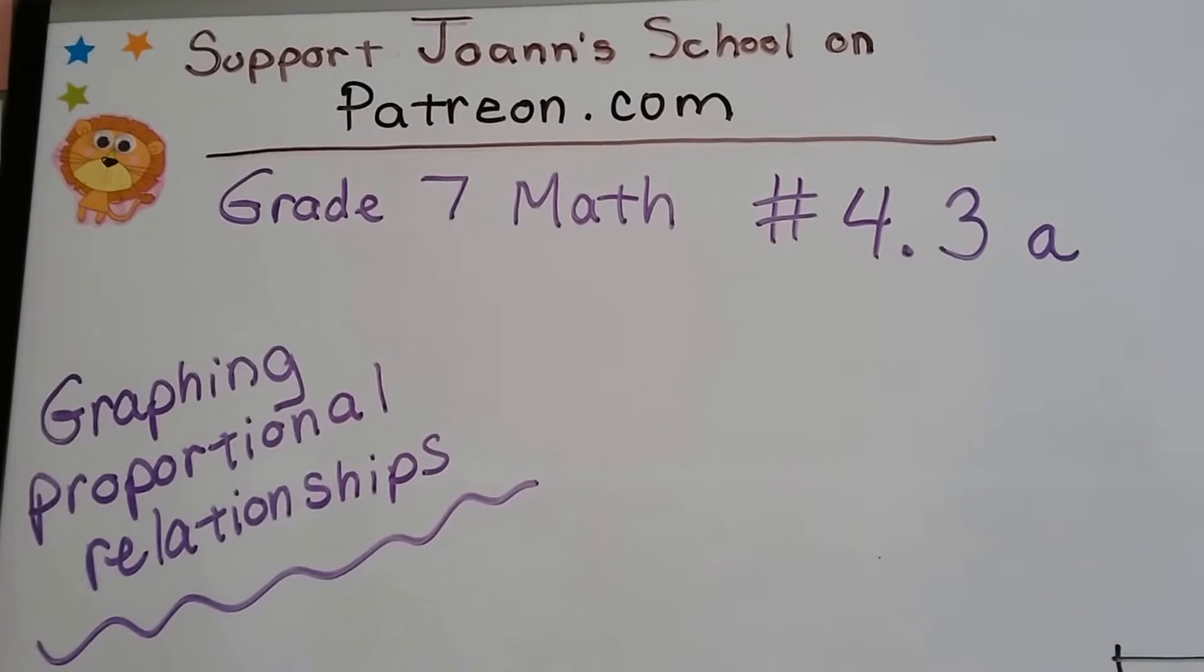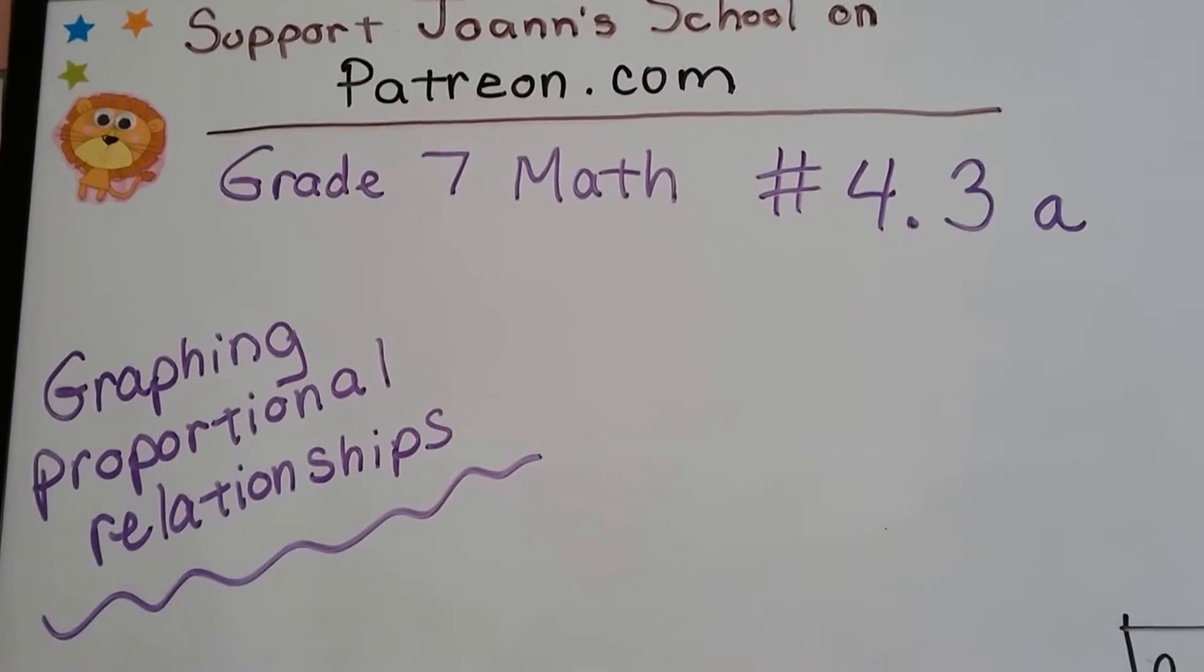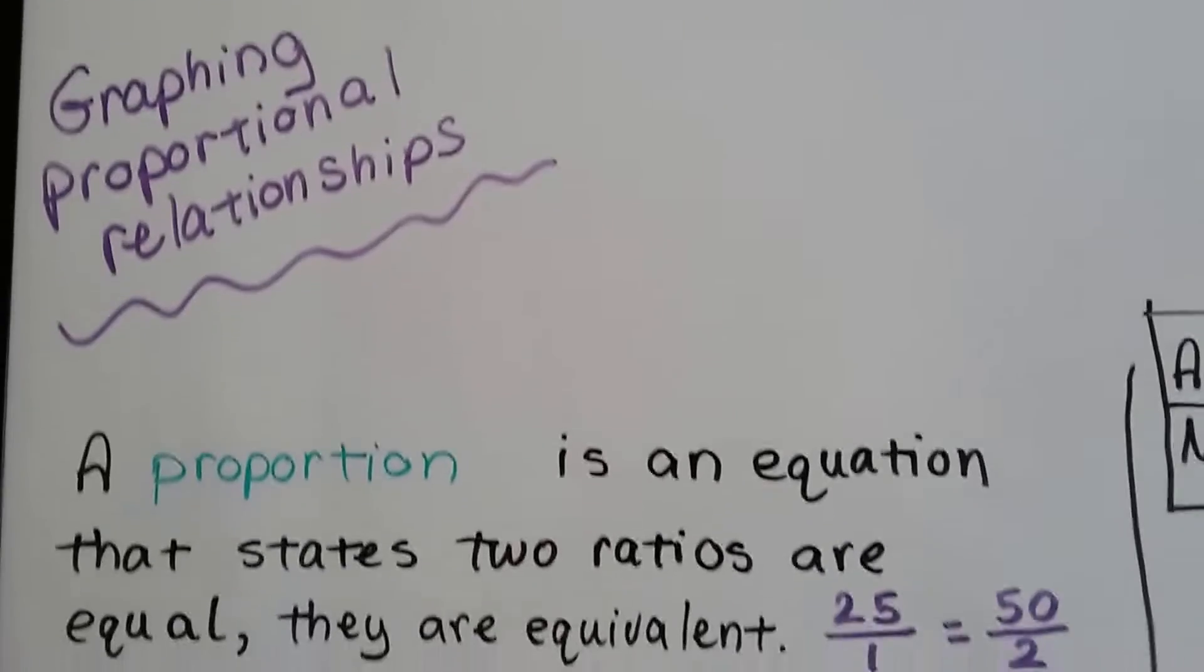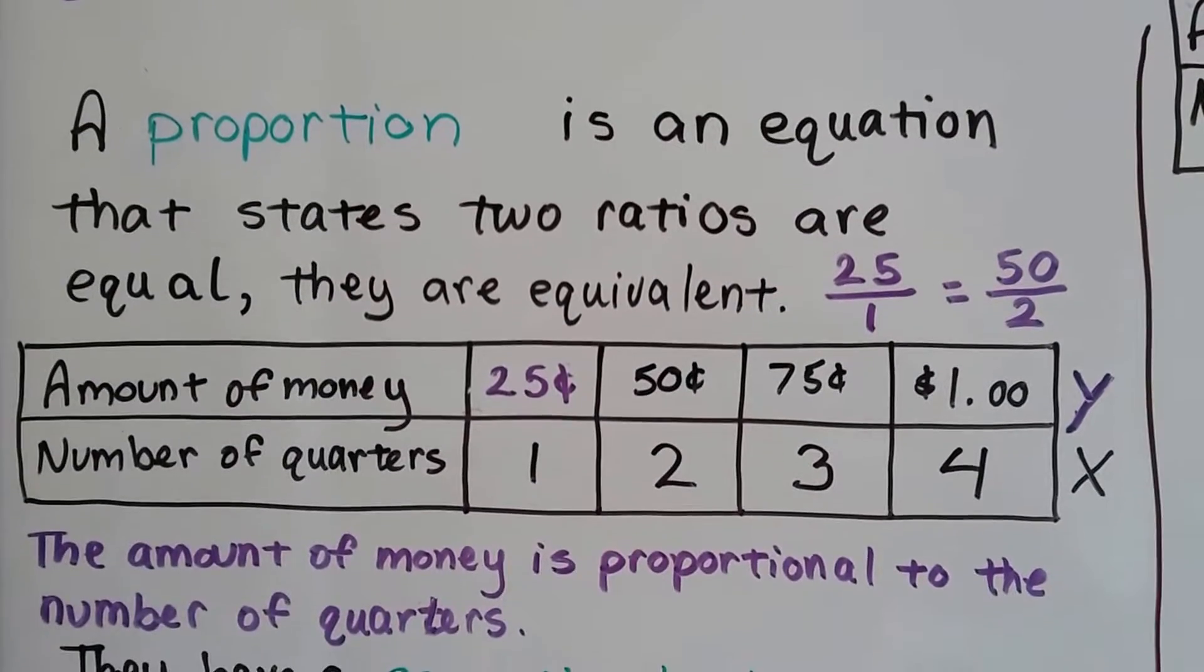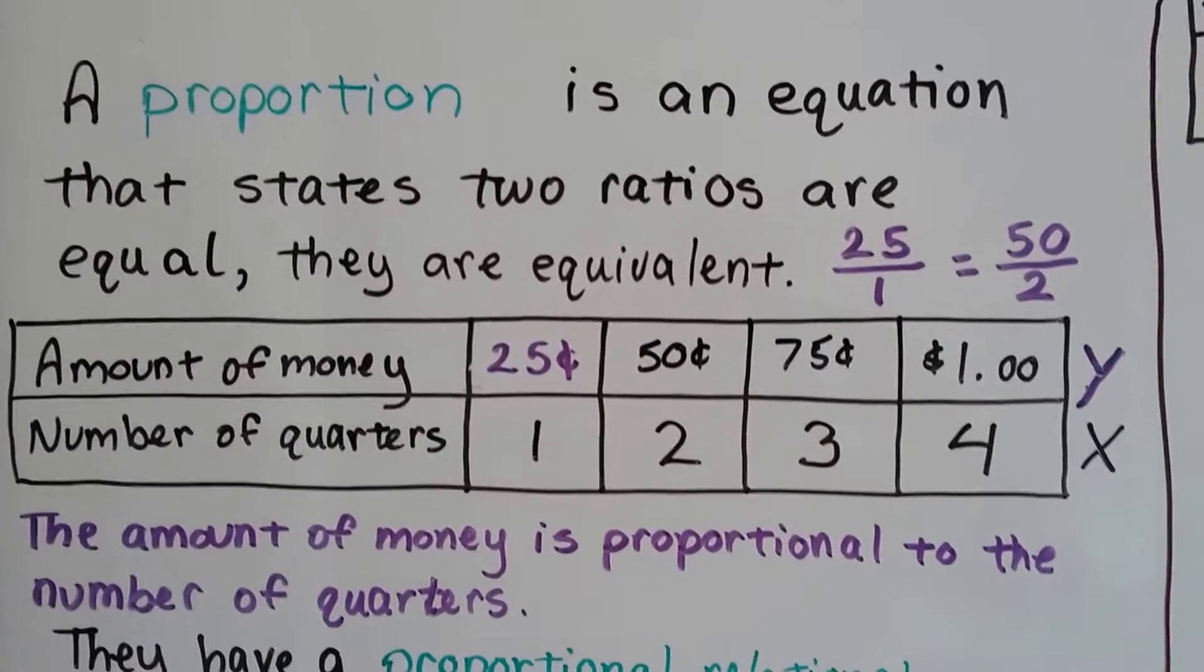Grade 7 math number 4.3a, graphing proportional relationships. We talked about in 4.2 that a proportion is an equation that states two ratios are equal, that they're equivalent.